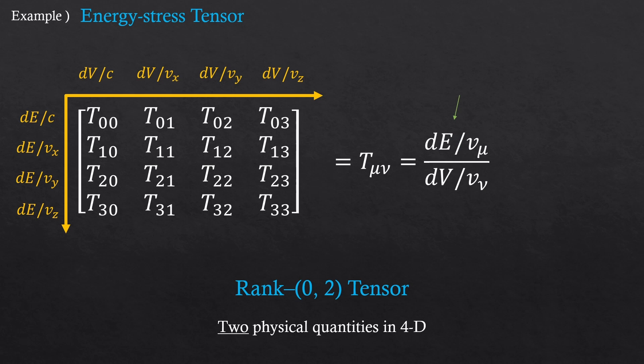Energy over velocity is kilogram meter squared per second squared times second over meter, which should give kilograms times meters per second. And what is this? Momentum. It's the same tensor, but it's just in terms of momentum now. The energy stress tensor is also called momentum stress tensor.